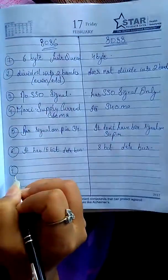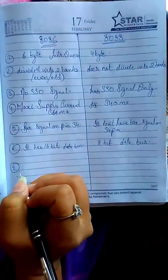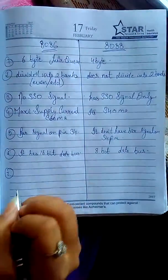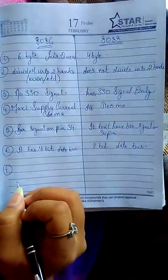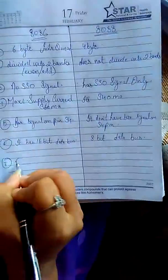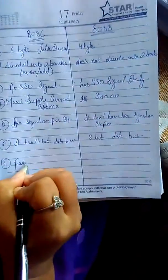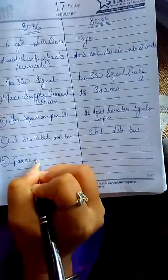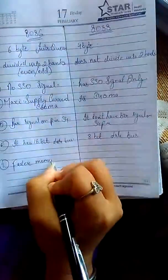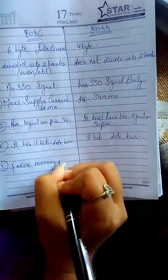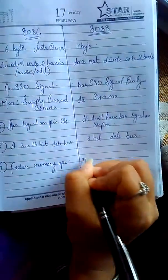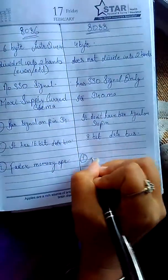The next point of difference is that the 8086 has faster memory operation, while the 8088 has slower memory operation.